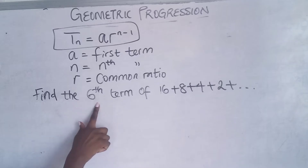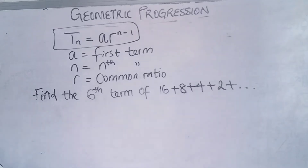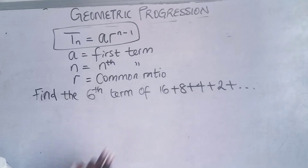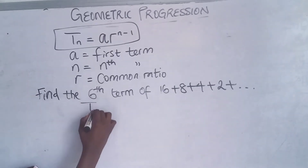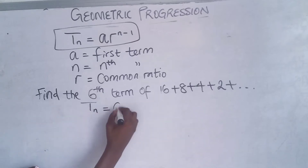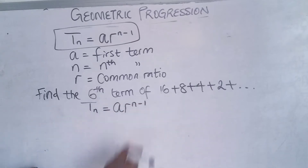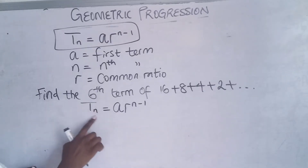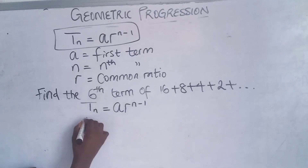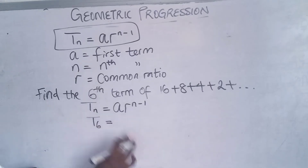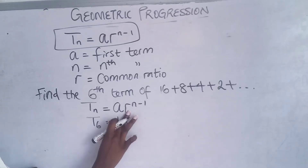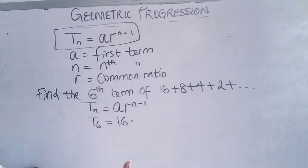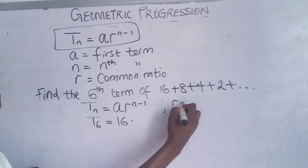Given a question like this, we're asked to find the sixth term of this series — this is a geometric series. First things first, you have to know your formula: T(n) = a·r^(n-1). We're asked to find the sixth term, so T6 is what we want. 'a' is your first term, so what's our first term here? It is 16.